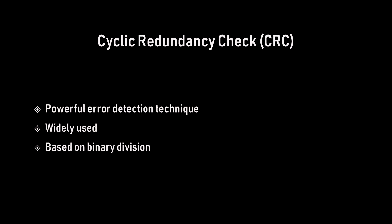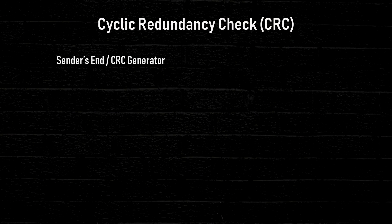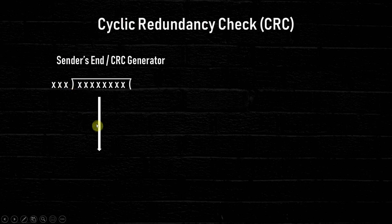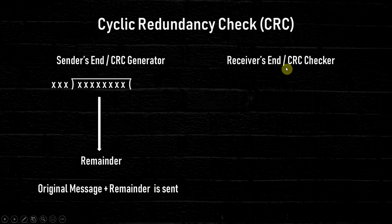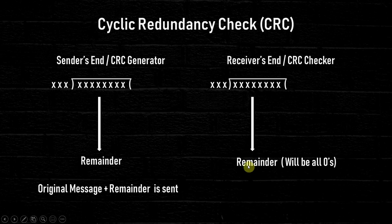CRC is based on binary division. The basic concept is that binary division is performed at the sender's end, also known as the CRC generator. We perform binary division and get the remainder. That remainder is attached to the original message as a redundancy bit and sent to the receiver's end, also known as the CRC checker. There we perform the very same binary division again, and this time the remainder will be all zeros, which signifies there was no error during transmission.